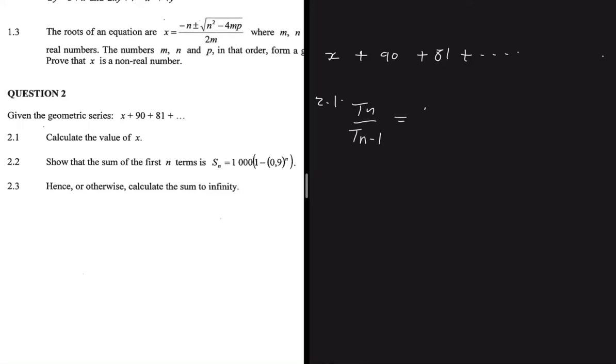So if we have T3, T_(n-1) is T2. And then if we have T2, T_(n-1) is T1. So this is the idea we're going to use to determine the value of X.